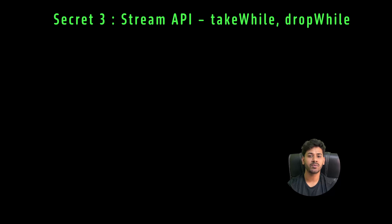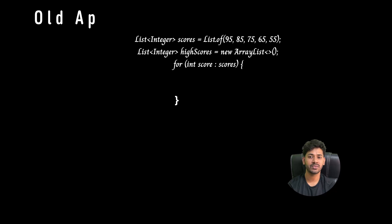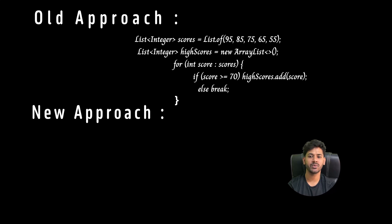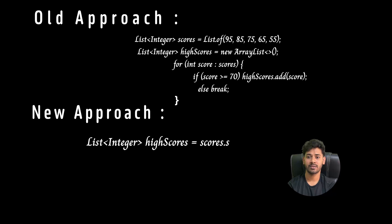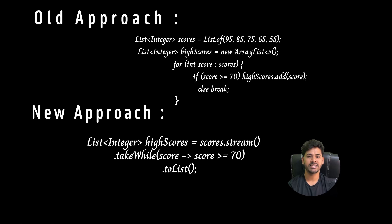Secret three: Stream API's takeWhile and dropWhile. Java 9 added powerful stream methods to control flow naturally. The old approach iterates a list using a for loop and checks a condition, then breaks. The new approach lets you create a stream from the list and use .takeWhile() or .dropWhile() with your condition, like score greater than or less than some value.